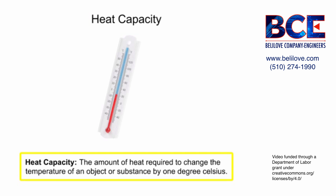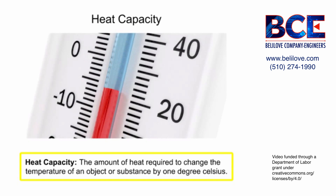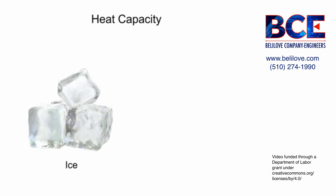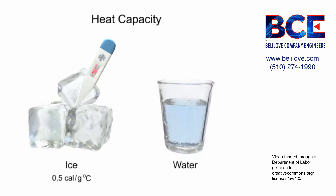Heat capacity is the amount of heat required to change the temperature of an object or substance by 1 degree Celsius. The heat capacity of water varies depending on its phase. As solid ice, the heat capacity of water is 0.5 calories per gram for every 1 degree Celsius, which means it takes half a calorie to raise the temperature of 1 gram of ice 1 degree Celsius. As a liquid, water's heat capacity is 1 calorie per gram for every 1 degree Celsius, so it takes 1 calorie of heat energy to raise 1 gram of water 1 degree Celsius.